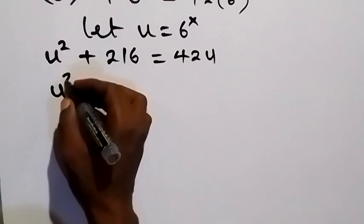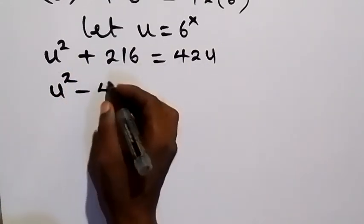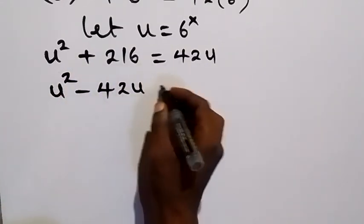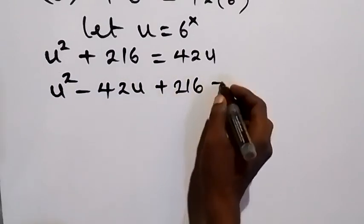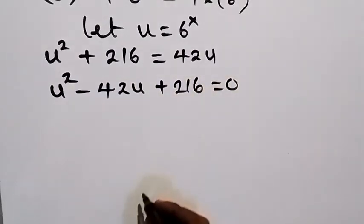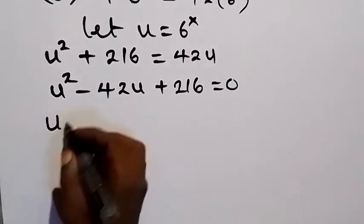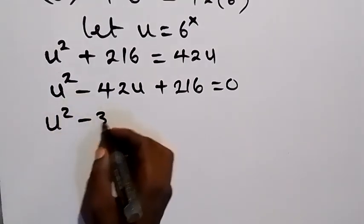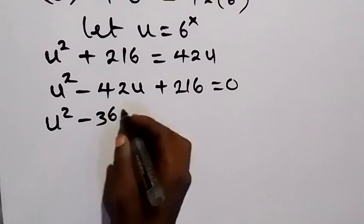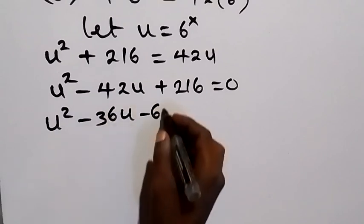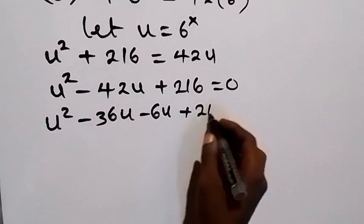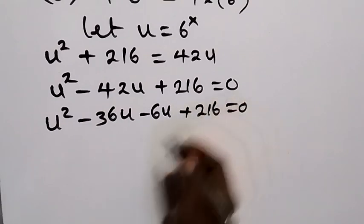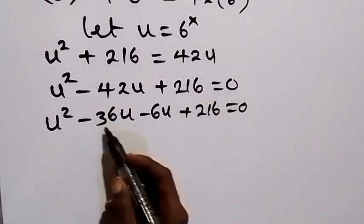Now we take 42u to the other side to form a quadratic equation: u squared minus 42u plus 216 equals 0. To factorize, we split the middle term as minus 36u minus 6u, giving us u squared minus 36u minus 6u plus 216 equals 0.